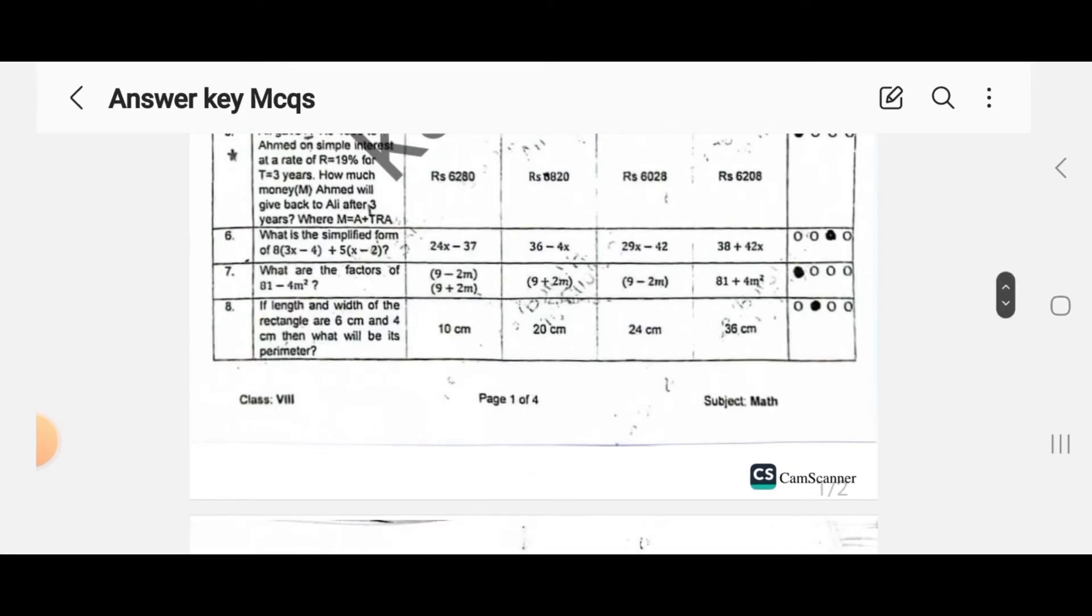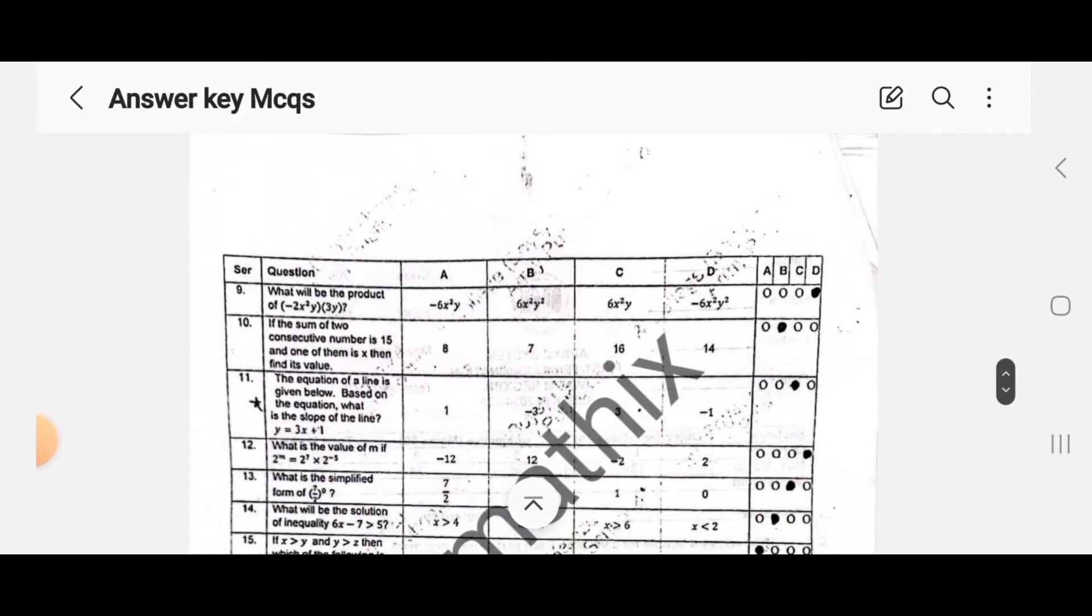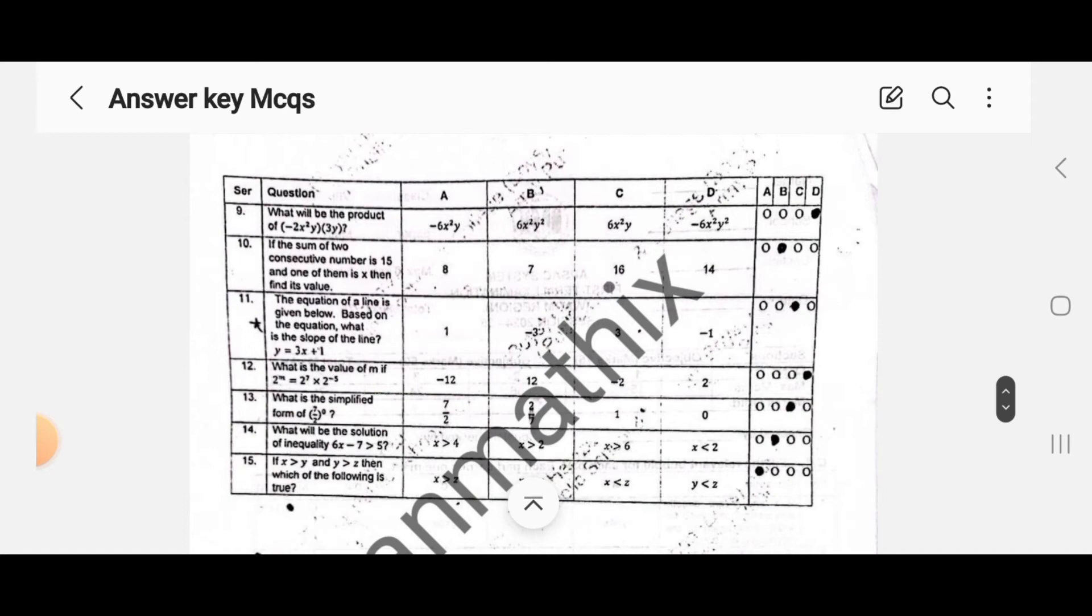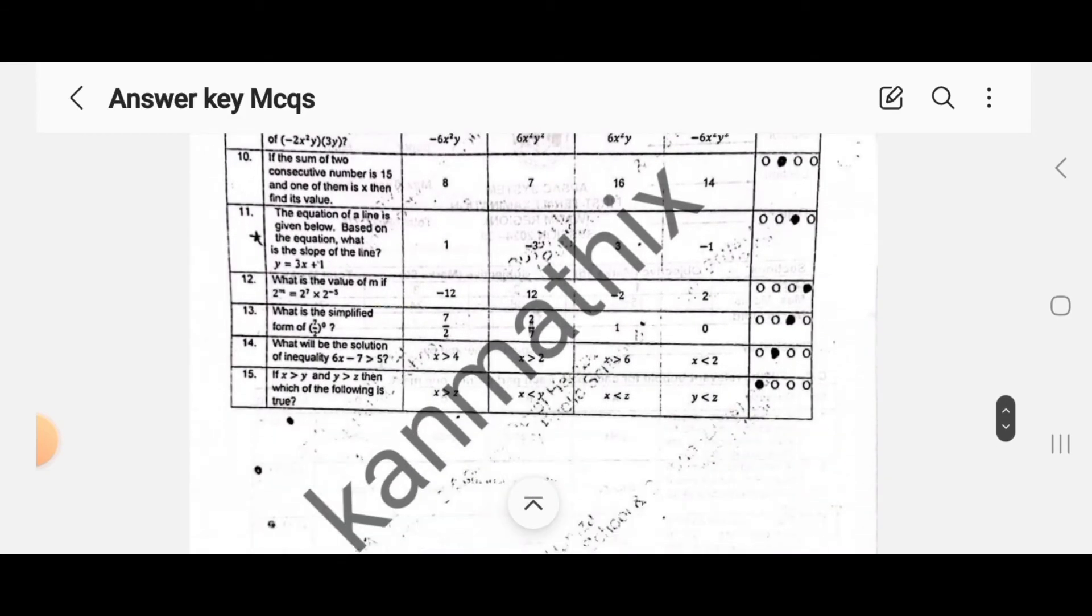correct option is B. MCQ nine, correct option is D. MCQ 10, correct option is B. MCQ 11, correct option is C. MCQ 12, correct option D. MCQ 13, correct option is C.